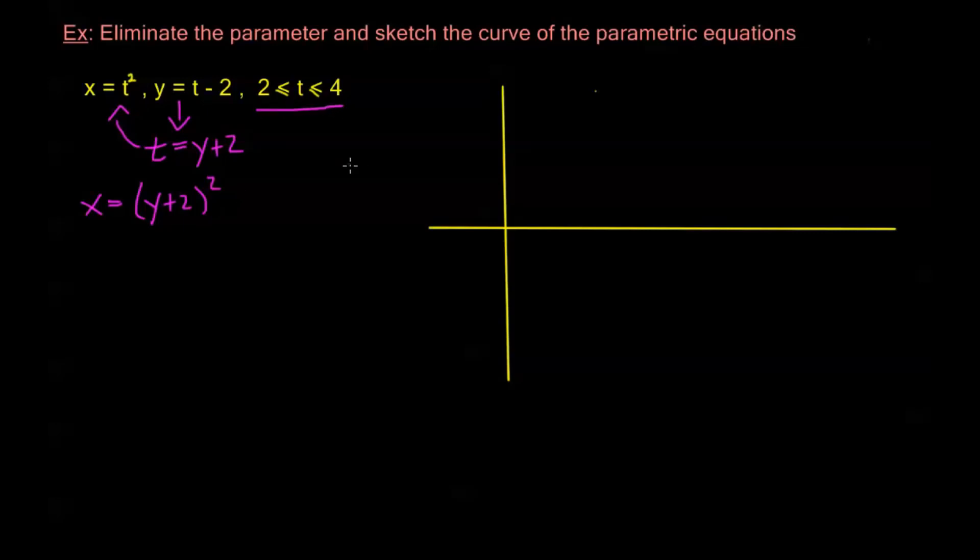Now before we start drawing, I have this restriction in t. My t is greater than or equal to 2 and less than or equal to 4. So let's try to figure out what one of my variables are going to be restricted to now that I don't have any t's here to refer to. Now if t is greater than or equal to 2 or less than or equal to 4, notice that my y then is less than or equal to and greater than or equal to. We can take it right here, Y is t minus 2. So the smallest that y is going to be is when t is at its minimum as well, so the least that y can be is 2 minus 2.